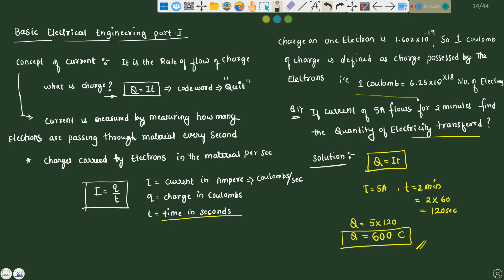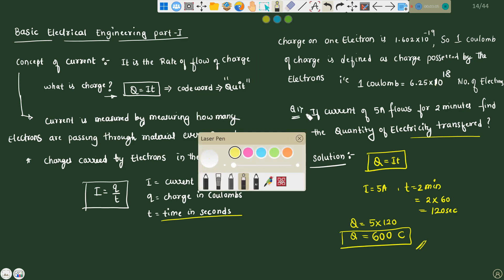One coulomb of charge is defined as charge possessed by the electron. So one coulomb is nothing but 6.25 into 10 raise to 18. Small correction here. What is the 1 coulomb? 6.25 into 10 raise to 18 number of electrons.